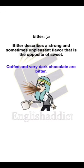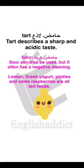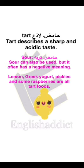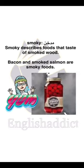Bitter تعني مر. We also have the word tart. Tart describes a sharp and acidic taste — تعني حامض أو لاذع. It can also be used, but it often has a negative meaning, يعني قد تعني حامض ولكن في الغالب تحمل معنى سلبي. Lemon, Greek yogurt, pickles, and some raspberries are all tart foods.